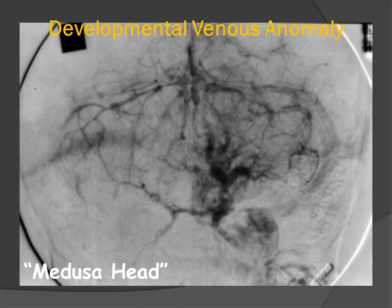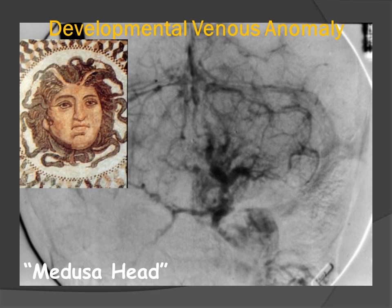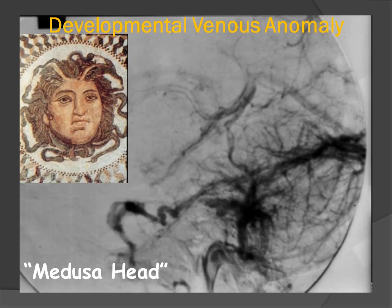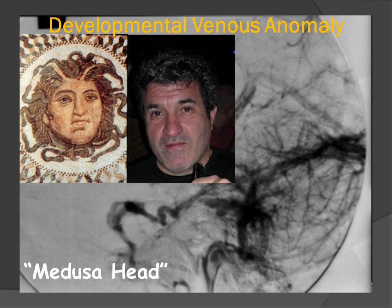Here is another posterior fossa developmental venous anomaly seen on the venous phase from a vertebral injection. Again, we have the appearance of multiple collector veins draining into a dominant transcortical vein. But to my eye, this does not look like the Medusa head as seen in this ancient Greek mosaic — it looks much more like my brother Peter, rather than the developmental venous anomaly.